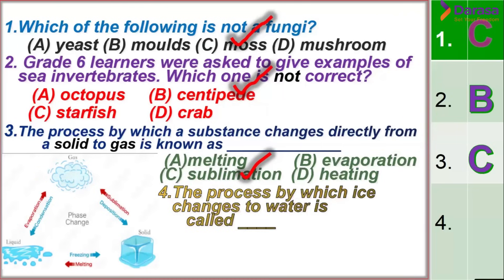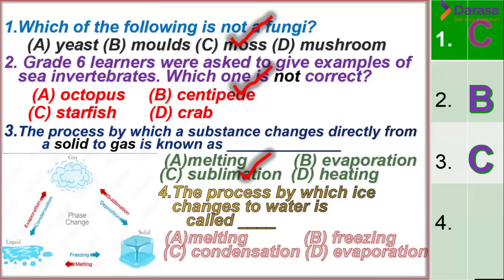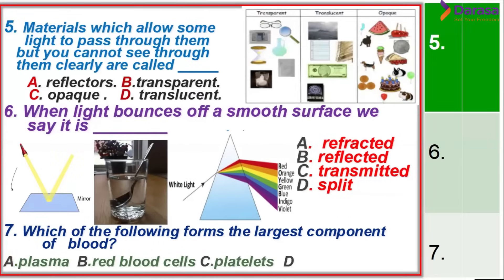Question 4: The process by which a substance changes to water is called — the correct answer is melting, because it is a solid (ice) changing to a liquid (water).